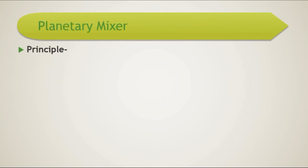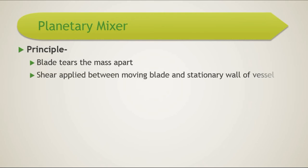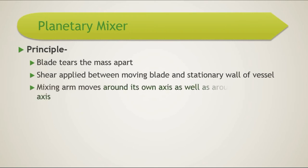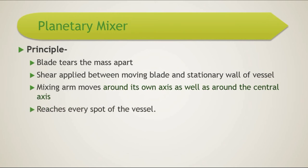Now we discuss the second agitator mixer, the planetary mixer. In a planetary mixer, blades tear the mass apart and shear is applied between the moving blades and the stationary wall of the vessel. The mixing arm moves around its own axis as well as around the central axis, so because of that circular movement it reaches every spot and every corner of the vessel.